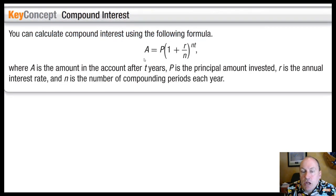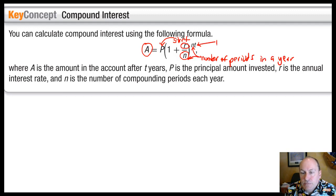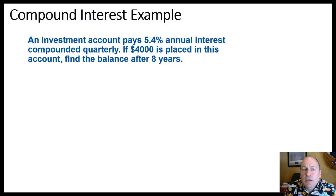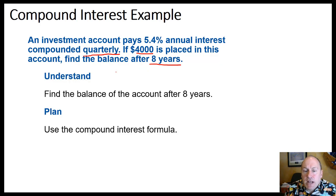Now let's look at compound interest, which uses an exponential function with the formula where A is the amount the investment is worth at any point in time, P is the starting amount, and the base equals 1 plus the annual interest rate divided by the number of periods — all raised to the nt power, where n is the number of periods per year and t is the number of years. Let's say an investment account has a 5.4% annual interest rate compounded quarterly, with an initial investment of $4,000. What's the balance after eight years?